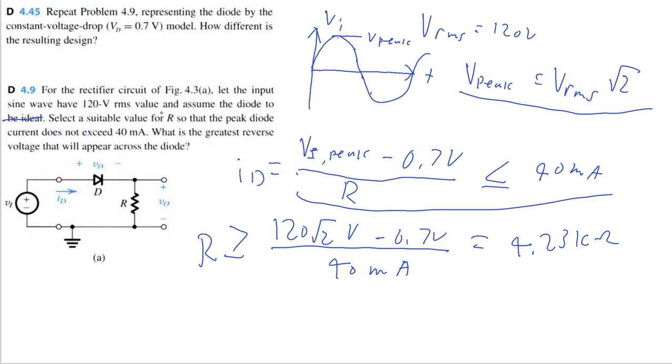And then if we compare this to the original question, I actually get pretty much the same value. So this 0.7 volts is very negligible. It looks like when I solved it in the other video I got 4.22 kilo-ohms. So barely any difference.